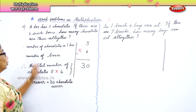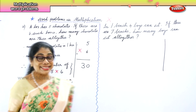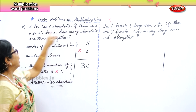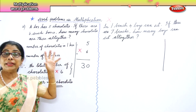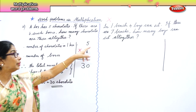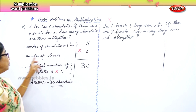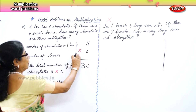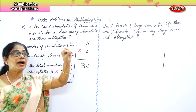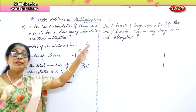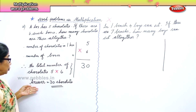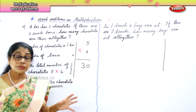Now look — first read the question: if a box has five chocolates and if there are six such boxes, how many chocolates are there altogether? Number of chocolates in one box — five. Number of boxes — six. Five plus five plus five, six times five — five sixes are thirty. So there are thirty chocolates altogether.